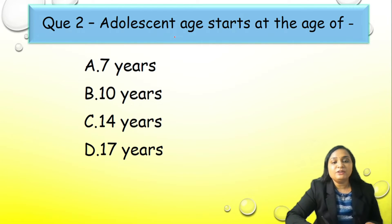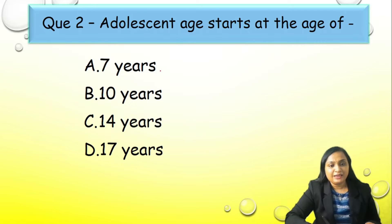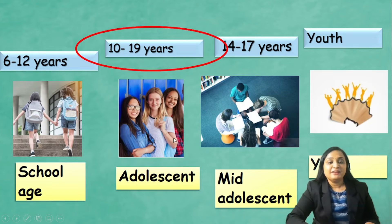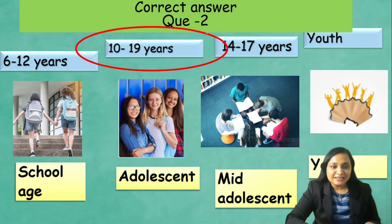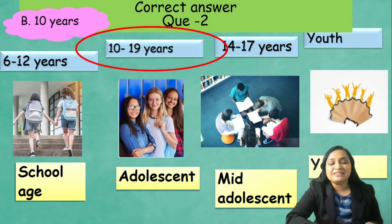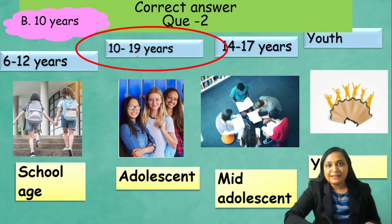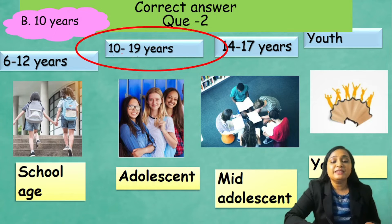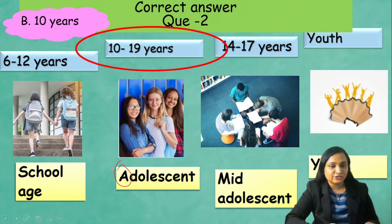Question number 2: Adolescent age starts at the age of — A) 7 years, B) 10 years, C) 14 years, or D) 17 years. Correct answer is option B, 10 years. Remember: 10 to 19 years stands for Adolescent age — just memorize this number range.